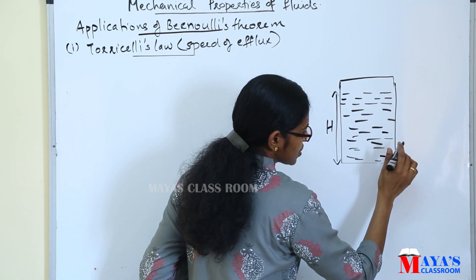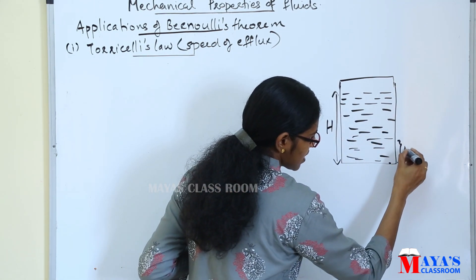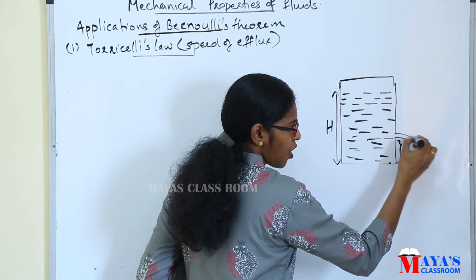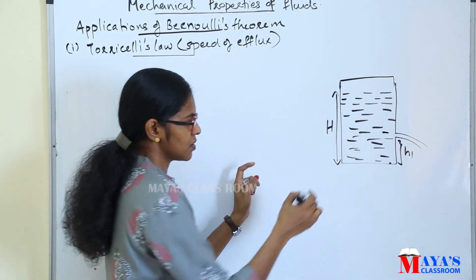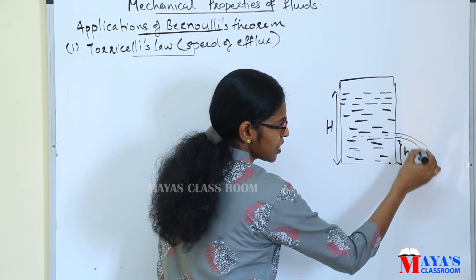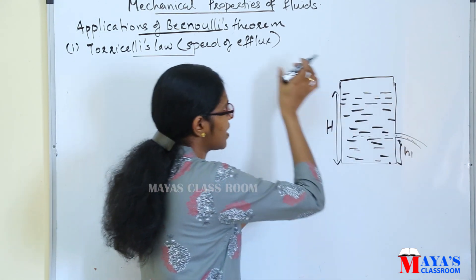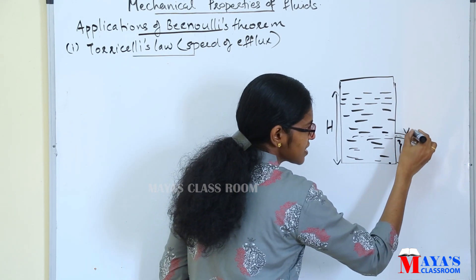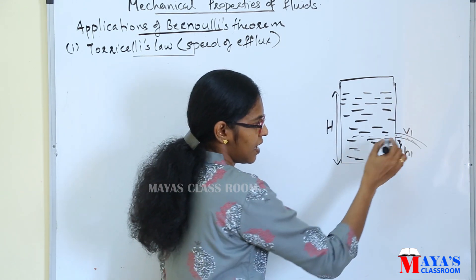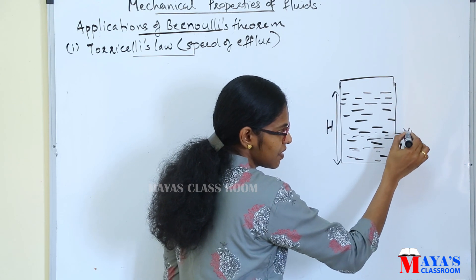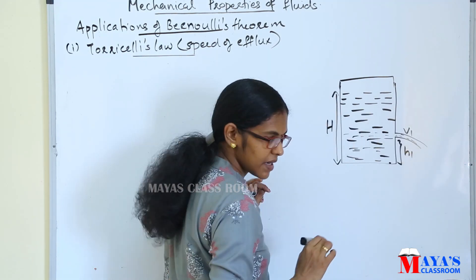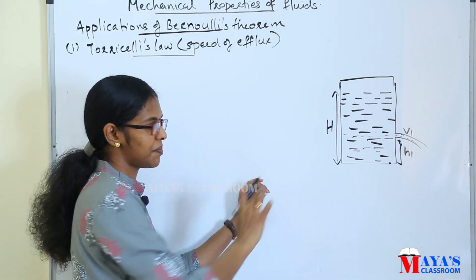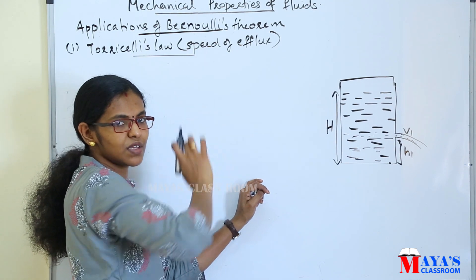Consider a tank with height H1 and a small opening or orifice. We consider the speed at that orifice and the velocity V1. We will consider this flow as efflux, and we call V1 the velocity or speed of efflux.